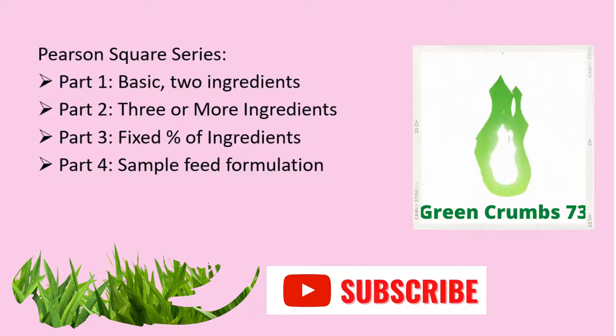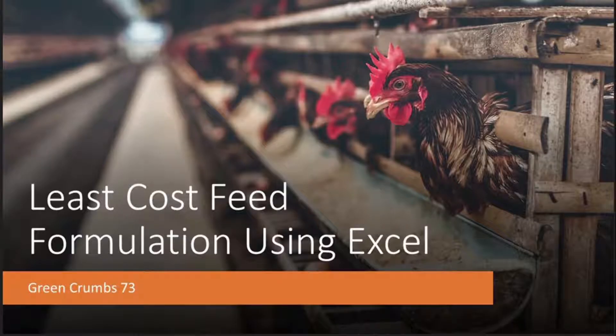I mentioned in my previous video entitled Least Cost Feed Formulation Using Excel that Pearson Square method is ideal if you will be calculating simple rations involving one nutrient and two ingredients. Another feature of this method is that the desired nutrient level should be intermediate between the nutrients of the ingredients you will be using.